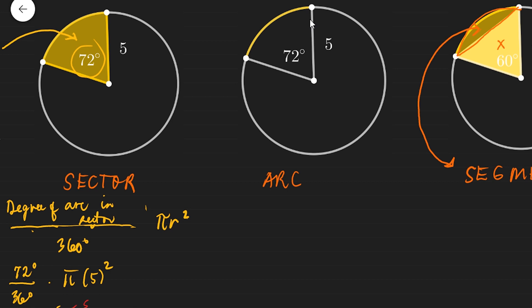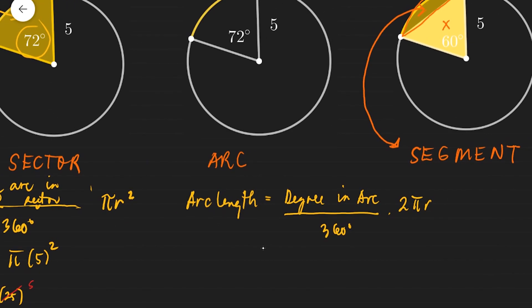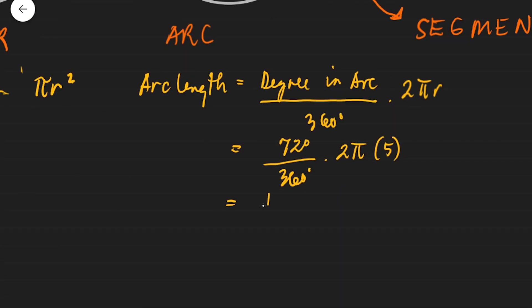The whole circle is 360 degrees. Our goal is to find a fraction we can multiply by the circumference to get the arc length. Since it covers 72 degrees, the arc length formula is: degree in arc over 360 degrees, times the circumference, which is 2 pi r. For this example: 72 over 360, times 2 times pi times 5. That's one-fifth times 10 pi, which gives us 2 pi.